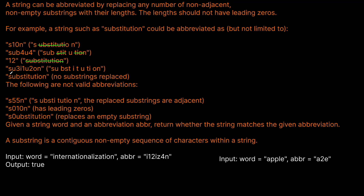We could also have su3i1tu2tion — so s, u, then 3 characters, i, 1 character (the t), u, then 2 characters (ti), and then on. And substitution itself is valid — we just don't replace anything.